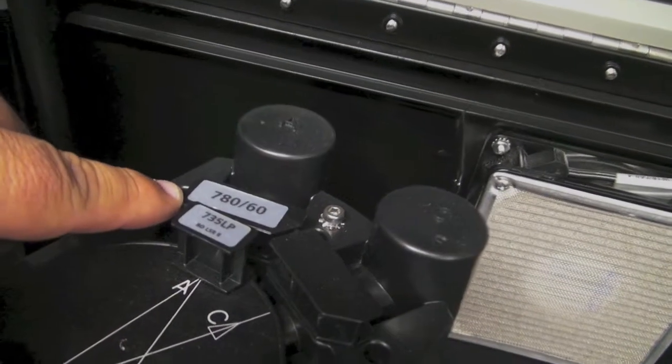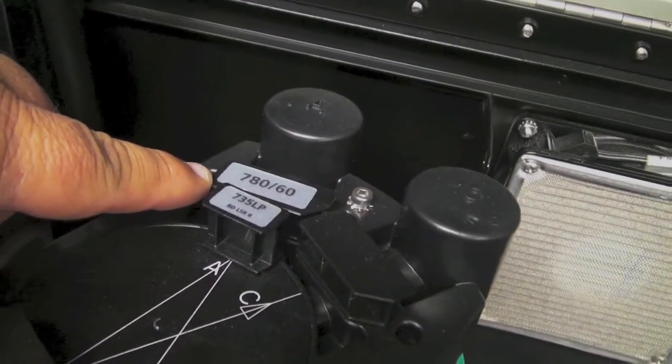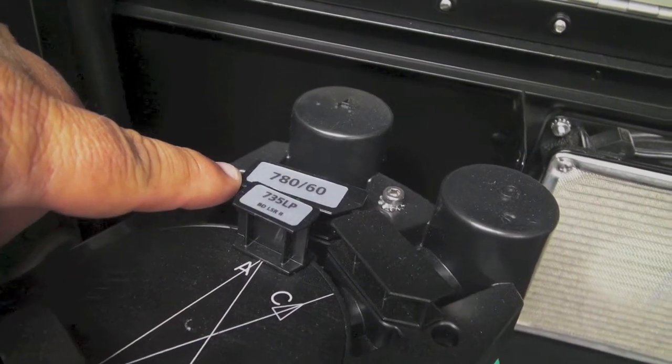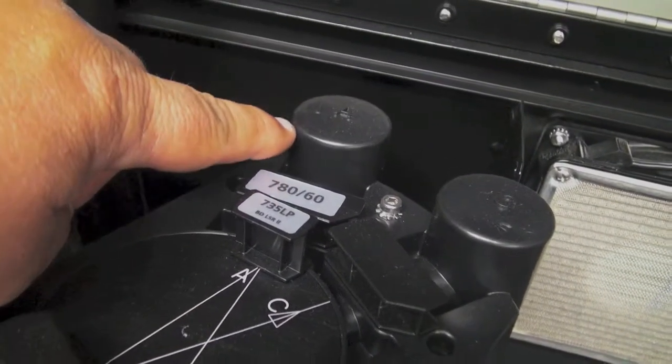is attenuated by a 780-60 band pass filter. So light with a range of 750 to 810 nanometers will be measured by this detector.